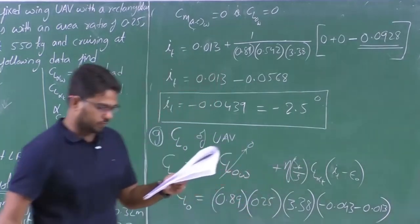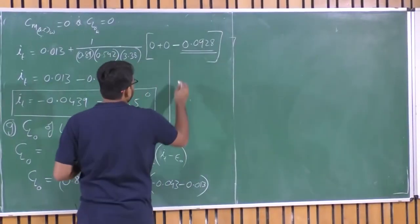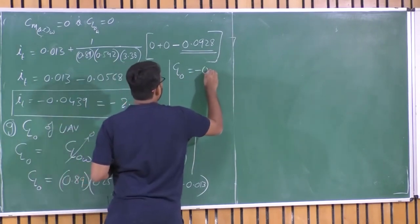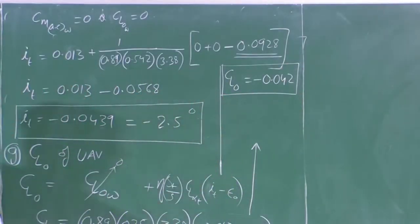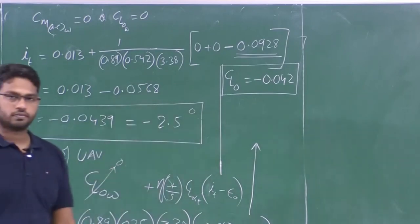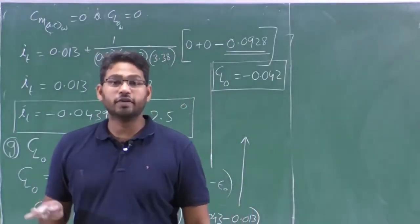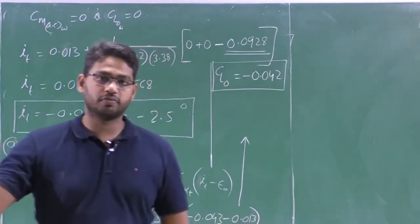Evaluating this gives CL_naught of the UAV = -0.042. This is negative because the tail setting angle is negative. With a symmetric wing, there is negative lift at zero angle of attack, so the aircraft must always be trimmed at a positive angle of attack, or a wing setting angle must be employed.